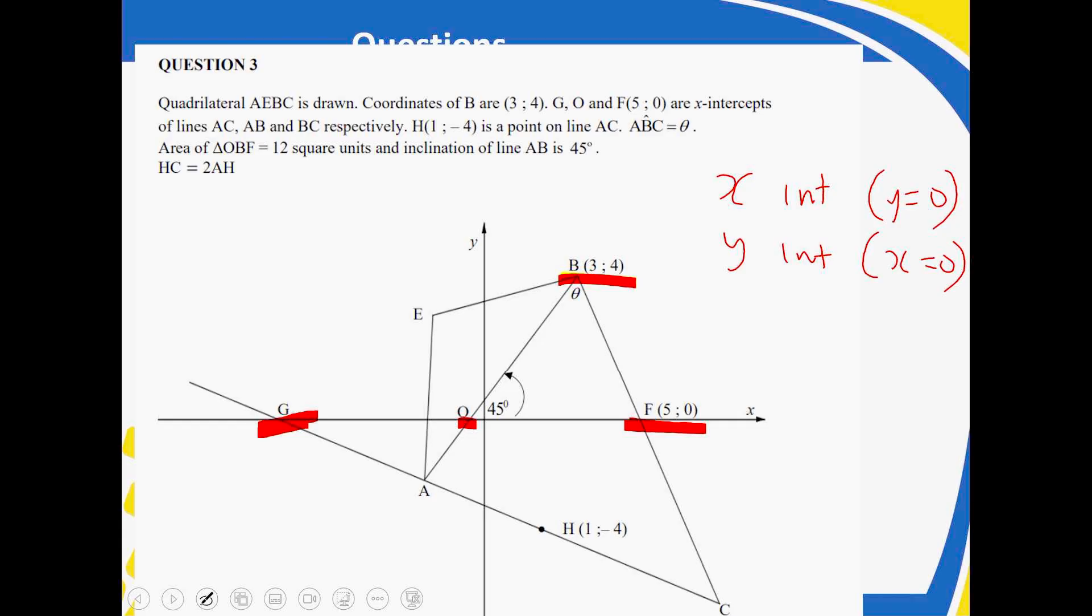Now, AB and BC, irrespective, those are the lines. H is given, our H is given, and the point is there. There's a point on the line AC. ABC is theta. So there is your theta there. You must check it.